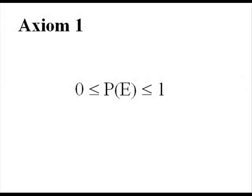The first axiom really states that the probability of E, the event E, is either going to happen, it's not going to happen, or something in between.